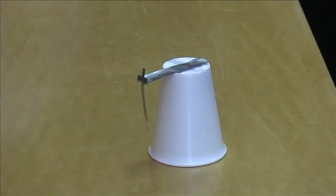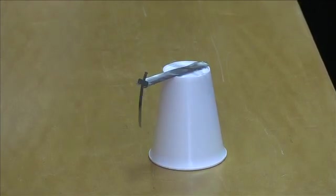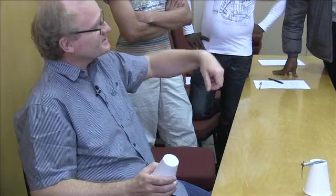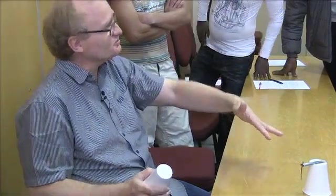Okay, guys. So that's the electroscope. Form groups of two. There's cups at the front, tin at the front, sticky tape at the front, scissors at the front. I want you each to build an electroscope for each group of two. Let's do that now. Good.